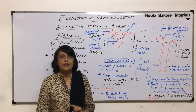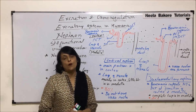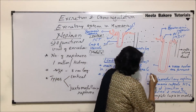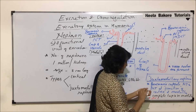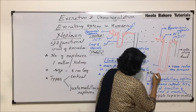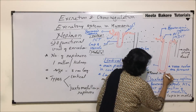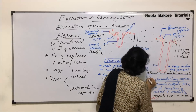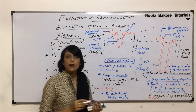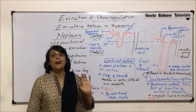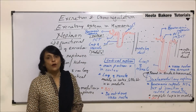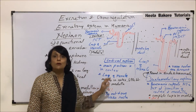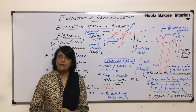One more thing to note is that juxtamedullary nephrons are found only in birds and mammals. So here we have compared these two types of nephrons. In the next video, we will talk about the complete structure of the nephron.